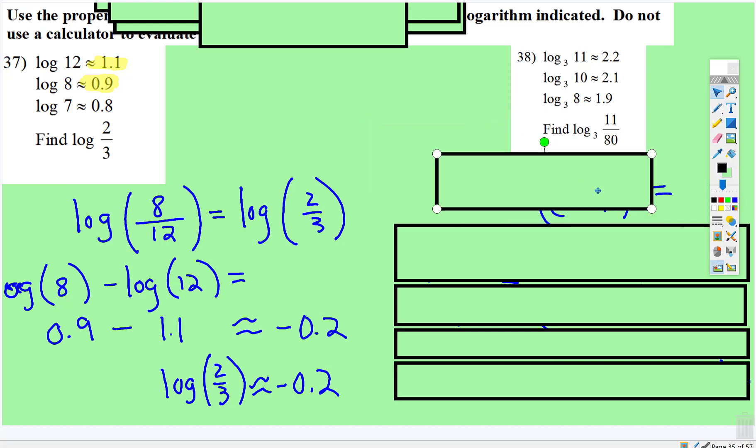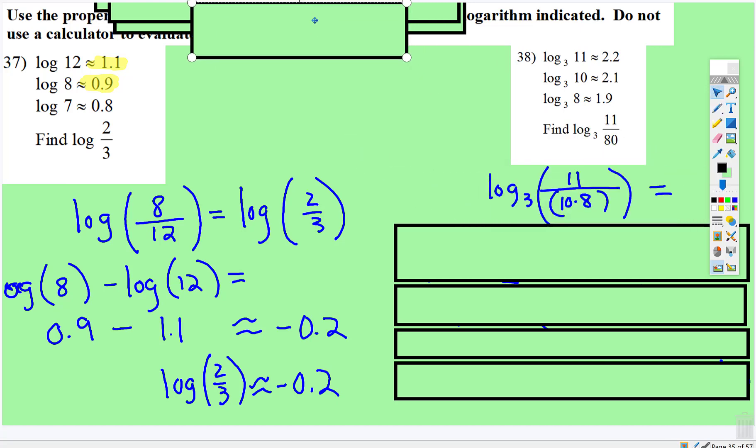Alright, let's come over here and do this one. We want to find log base 3 of 11 over 80. But look at what we have. We have values for 10, 8, and 11. So we can rewrite 80 as 10 times 8.